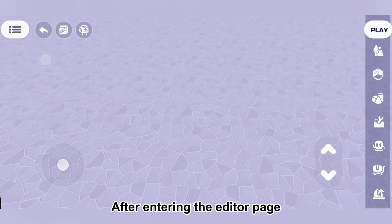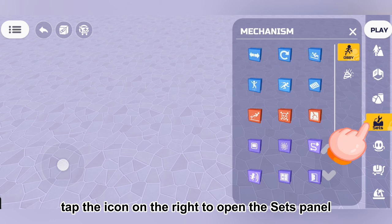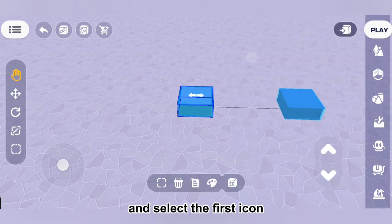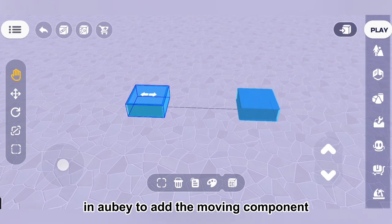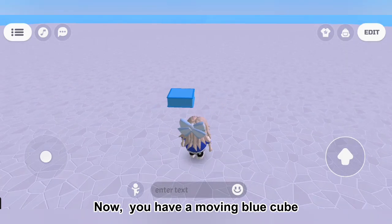After entering the editor page, tap the icon on the right to open the sets panel and select the first icon in OBI to add the moving component. Now you have a moving blue cube.